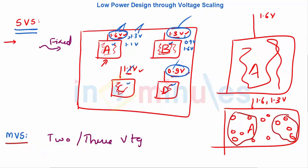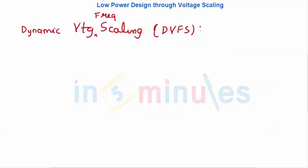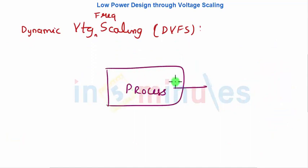In dynamic voltage scaling, you can have more than two or three, or in simple words, you can have a large number of voltage levels which are dynamically applied. Now let's understand technically - if you have a processor, it will have to perform some function, let's call that as a workload which it has to do.